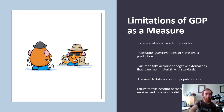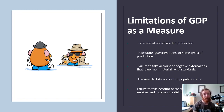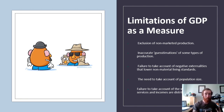We also need to take into account population size. The population is growing every year — more people are being born than dying in Australia. We've got about 27 million people and that's growing daily. More people means more demand for goods and services and therefore more production, but that doesn't mean you're producing more per person. The population might increase by 5 percent but production only by 2 percent, meaning living standards actually go down as people compete for goods and services.